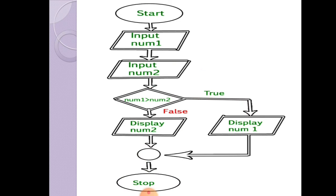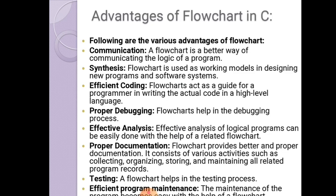When we represent the flow of information in a step-by-step process, that is known as an algorithm. When we represent the flow of information in a graphical or diagrammatic format, that is known as a flowchart.